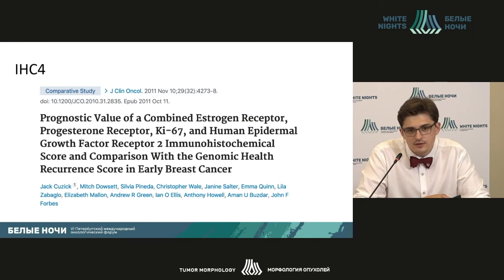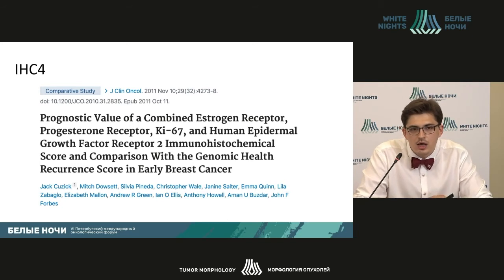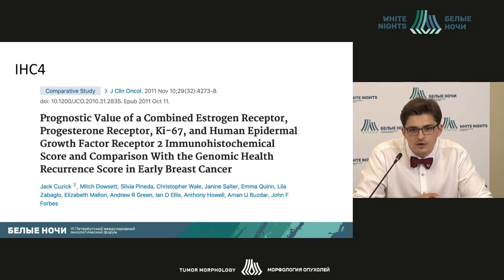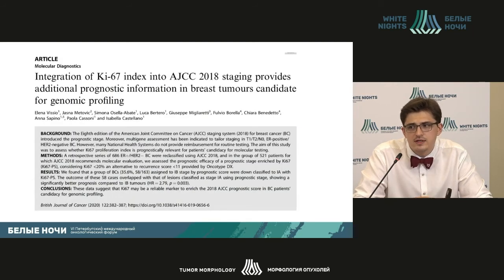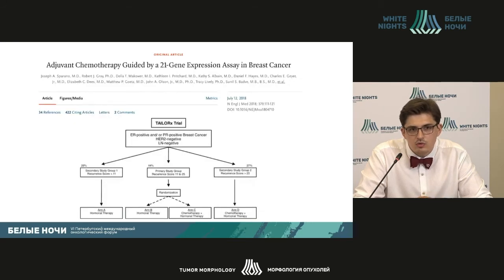Since 2018, attempts have been made to incorporate proliferative activity into the structural assessment of breast carcinoma as a response to anti-HER2 therapy and chemotherapy. A 2011 publication in clinical oncology demonstrated comparability between Oncotype DX and the IHC4 score routinely used for breast carcinoma. A 2020 study showed that the Ki-67 index enables an additional prognostic category in the WHO classification of breast tumors, useful for a specific patient group studied in the TAILORx clinical trial.